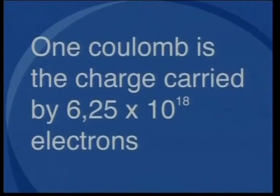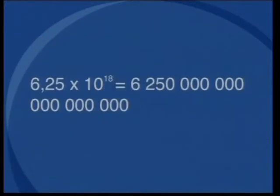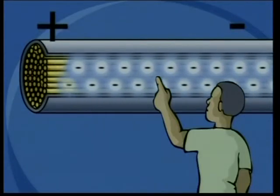A coulomb is the amount of charge carried by 6.25 times 10 to the 18 electrons. 6.25 times 10 to the 18 is scientific notation for 6.25 million million million electrons. That is a lot of electrons moving past a given point in one second. Because we cannot count that fast, and cannot even see these electrons, we use an instrument called an ammeter, which will assist us in measuring the flow of charge through a conductor.